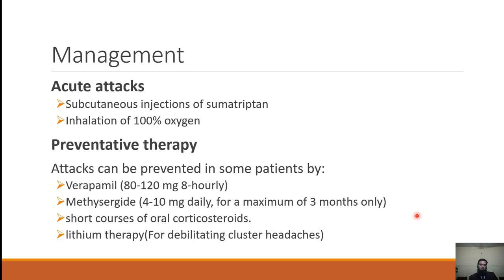For acute cluster headache attacks, subcutaneous injection of sumatriptan is a very effective therapy. Giving 100% oxygen via a mask can also abort the attack — one patient came to emergency with cluster headache and oxygen alone resolved it. The patient himself knew oxygen would help.